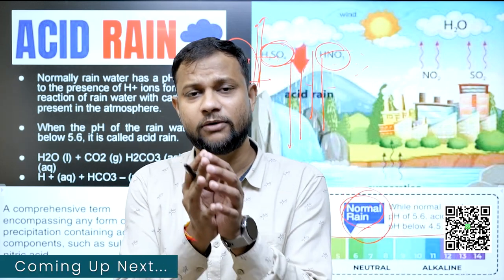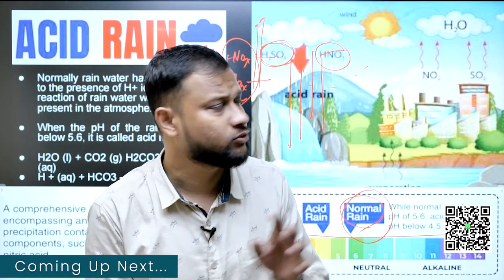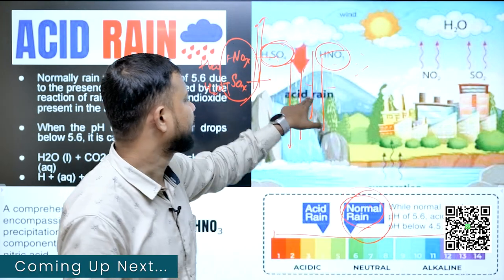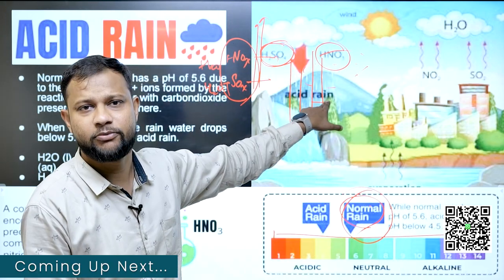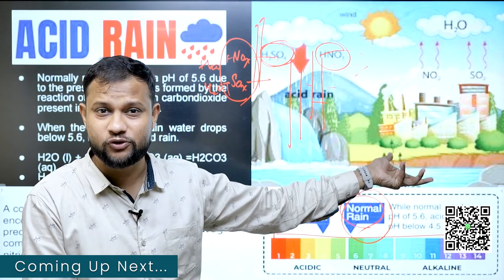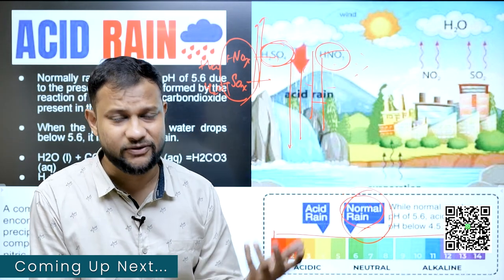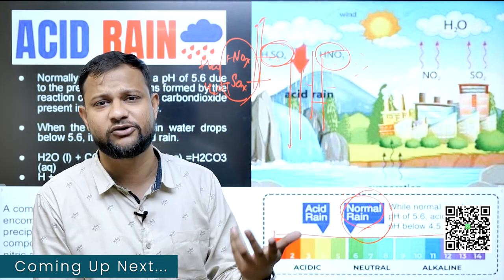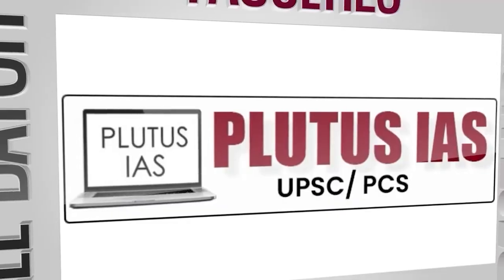Acid rain can take the form of rain, possibly snow, possibly sleet — it depends on the condition.